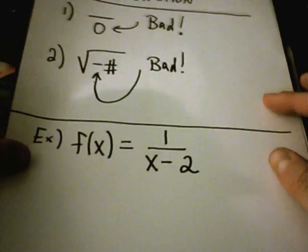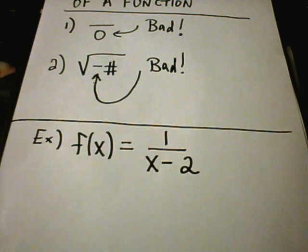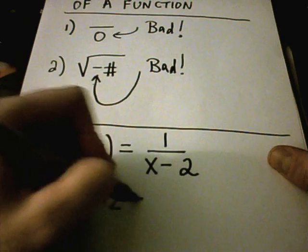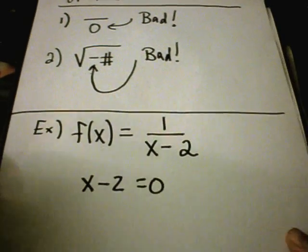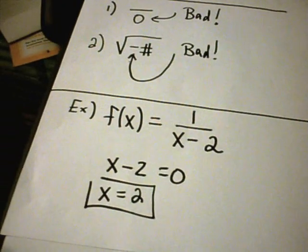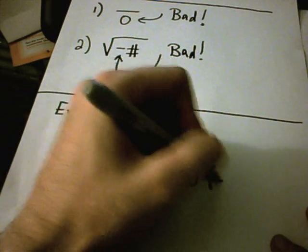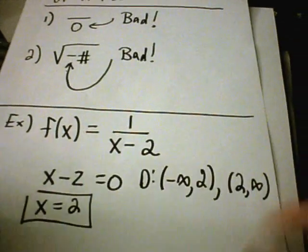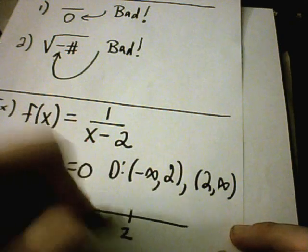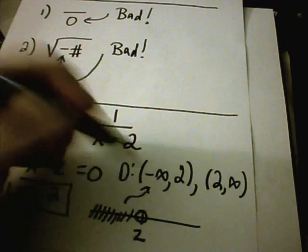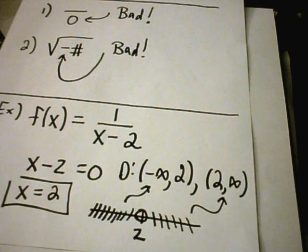Let's look at our first example: 1 over (x minus 2). We need to find any value that's going to make the denominator zero. We set the denominator equal to zero and solve, giving us x equals 2. That's a value we need to leave out of the domain. So the domain is from negative infinity up to 2, then 2 to infinity. On a number line, 2 is the one value left out, and everything to the left and right of it is included.